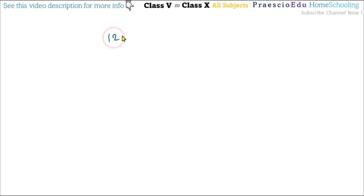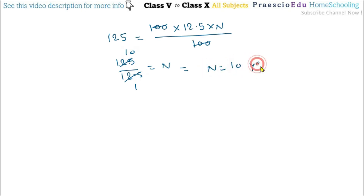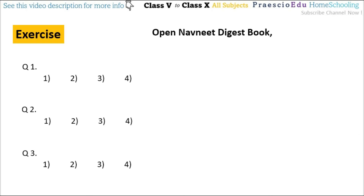Question number 3: in how many years will the interest on ₹100 become ₹125 at the rate of 12.5% per annum? So 125 = 100 × 12.5 × N / 100. The 100s cancel, giving 125 / 12.5 = N. Since 125 is 10 times 12.5, N equals 10 years. This is given in option number 3.